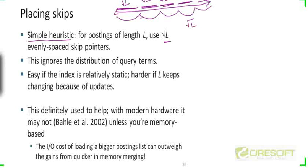Also note that skip pointers won't exist for intermediate results. If you have a longer AND query with three terms, you take the two terms with the smallest document frequencies, take their intersection using skip pointers, but the intermediate result generated will not have skip pointers. That's something to keep in mind.